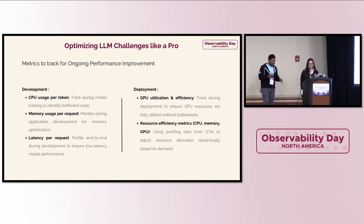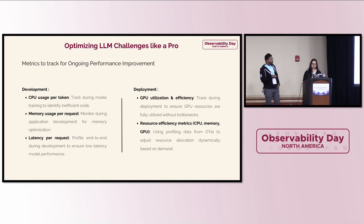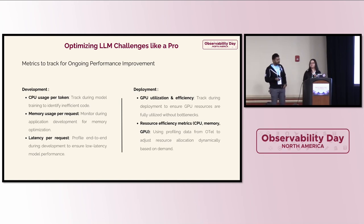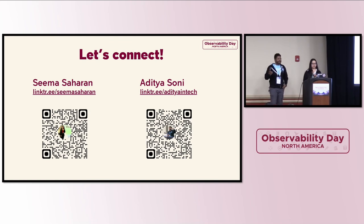Going forward, from developing to deploying — what are the things you should be majorly concerned about? In the development part, you can track CPUs per token, how a particular token is using CPU, API calls, and accordingly memory and latency. For deployment, you should be more concerned about GPU utilization and resources consuming more than required. That's all — you can catch us on LinkedIn.